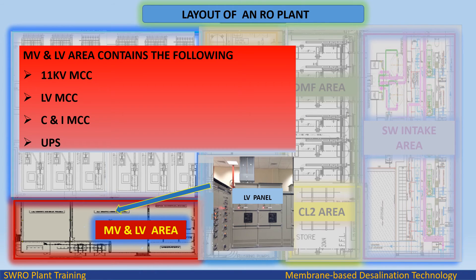Medium voltage (MV) and low voltage (LV) area contains the following: 11 KV MCC, LV MCC, control and instrument MCC, and UPS (uninterruptible power supply).